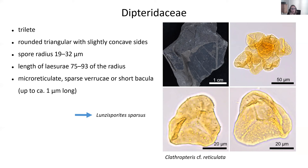Going to the Dipteridaceae: here we have Clopteropteris. The dispersed spores are trilete, rounded to triangular with slightly concave sides, quite small at 20 to 35 microns. They are slightly micro-reticulate or varicate, sometimes with short baculae. As a dispersed palynologist, you would call them Laevigatisporesis basis.